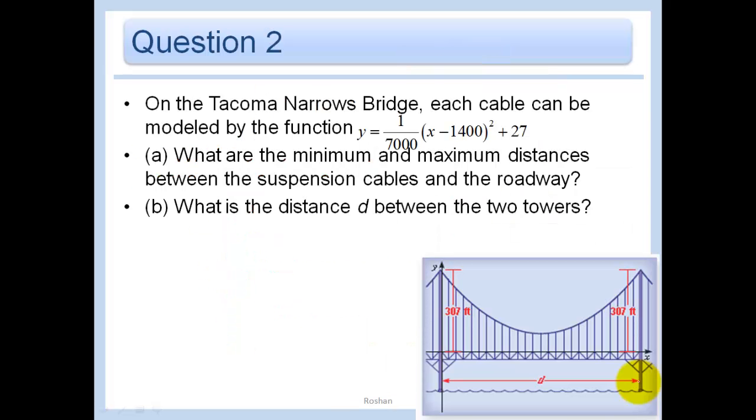On the Tacoma Narrows Bridge, each cable can be modeled by this function here. What are the minimum and maximum distances between the suspension cables and the roadway? They want to know the largest suspension cable and the shortest one. So the maximum is just going to be that 307 feet.